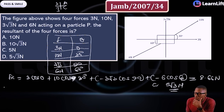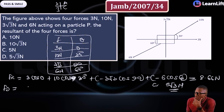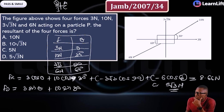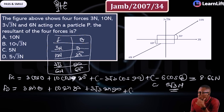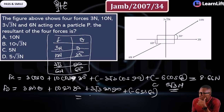For Fy: 3 sin 0°, plus 10 sin 30°. Sine is positive in the second quadrant: plus 3√3 sin 90°. The last force in the fourth quadrant gives minus 6 sin 60°. Calculate that and you get 5 N.